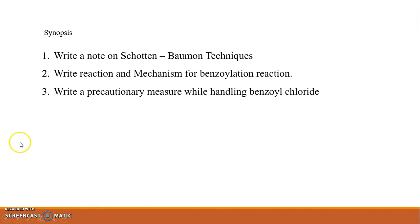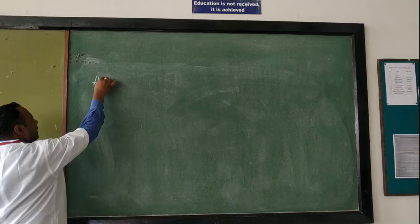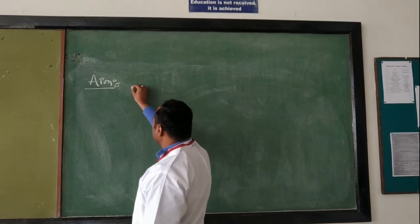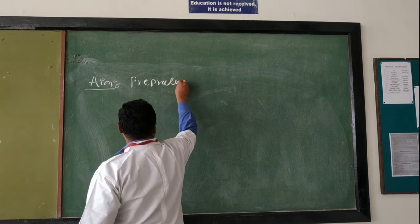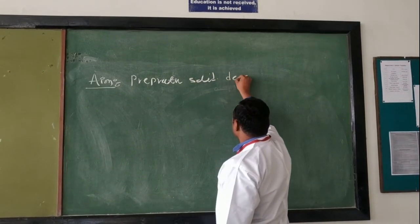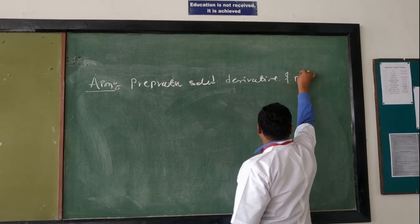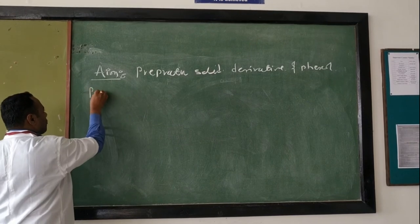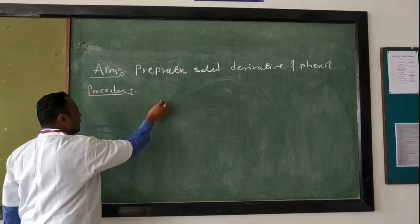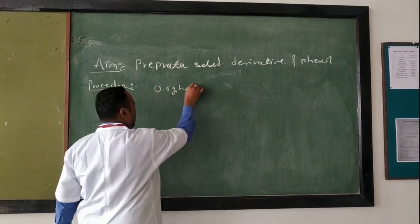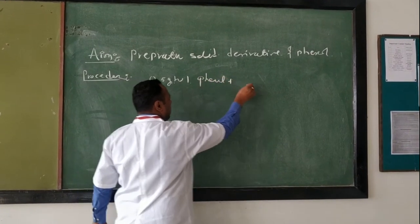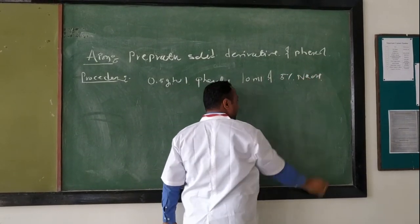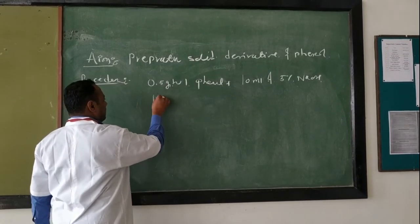We will see the actual practical in this session. Today we are going to learn preparation of phenol derivative, preparation of solid derivative of phenol by Schotten-Baumann technique. Schotten-Baumann technique is also called the benzoylation reaction. The procedure is: take 0.5 to 1 gram of phenol and 10 ml of 5% NaOH sodium hydroxide in iodine flask.